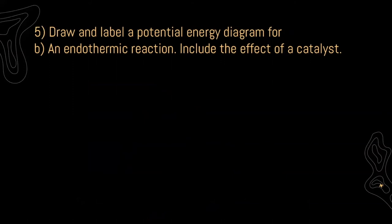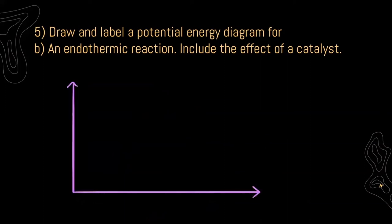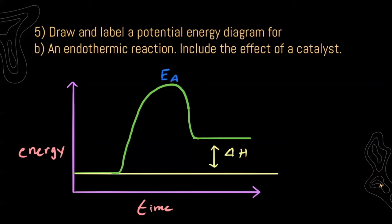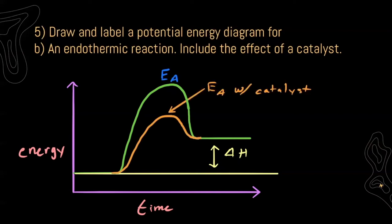For B it says draw an endothermic reaction and again include the effects of a catalyst. On the x-axis I'm going to have time and on the y-axis I'm going to have energy. This is for an endothermic reaction — how do we know that it's endothermic? We look at where our energy starts and ends; this difference means we have to include energy for this reaction to occur. That peak at the very top is our activation energy. With a catalyst, our new energy diagram shows the activation energy is significantly lower — less energy needs to be put in for this reaction to occur.